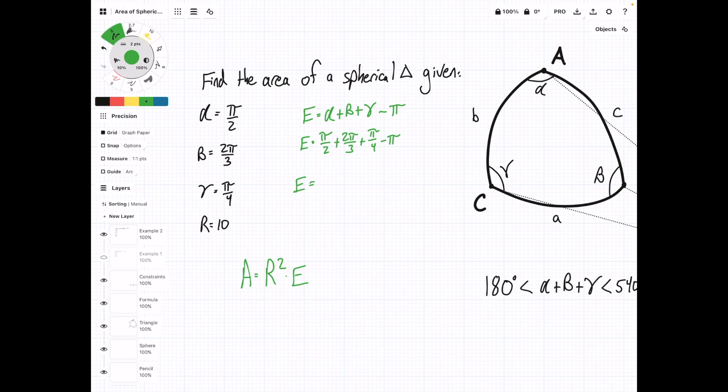Substitute this into a calculator, and then E is going to be 1.31. Now, subbing it into the area formula, we're going to have 10 squared times 1.31, and this equals 130.90 units squared.